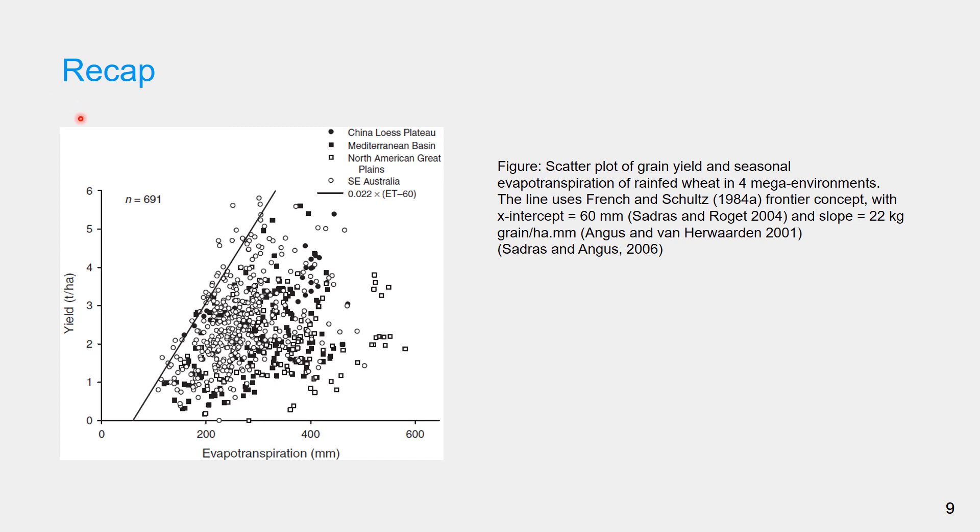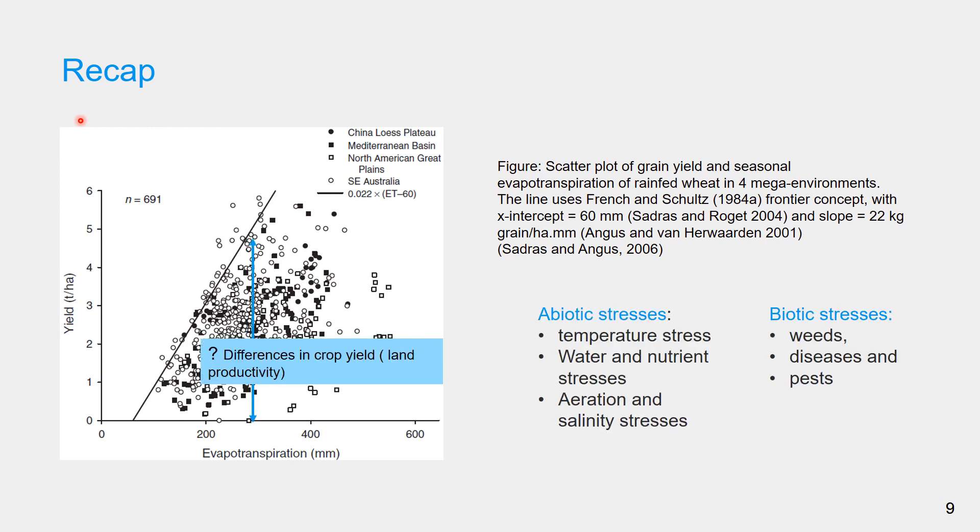The graph of crop yield or biomass response to water use has different shapes. There are generally proved relationships under optimal and suboptimal fertility conditions. The graph of crop yield is affected by many stress factors that can be categorized under biotic and abiotic stresses. The variation in crop yield can be due to temperature stresses, water and nutrient stresses or aeration and salinity stresses which can be called abiotic stresses, or it could be due to weeds, diseases and pests which can be lumped as biotic stresses.